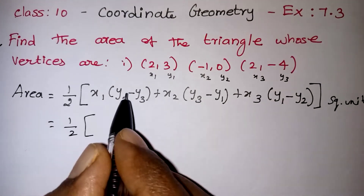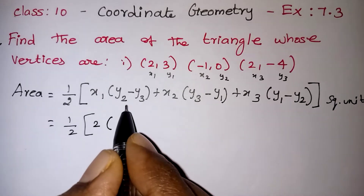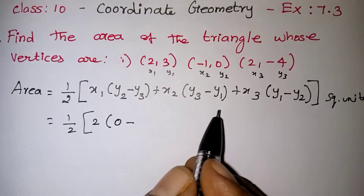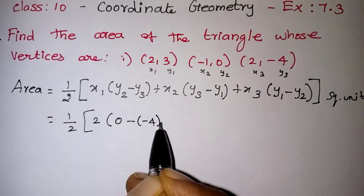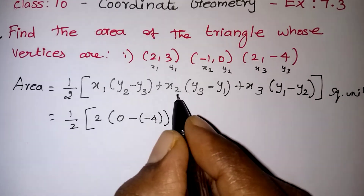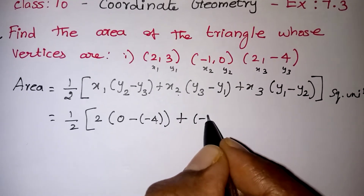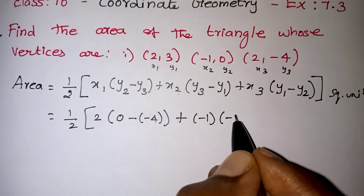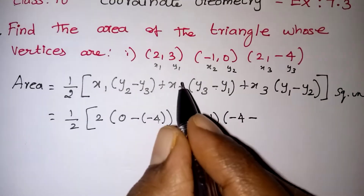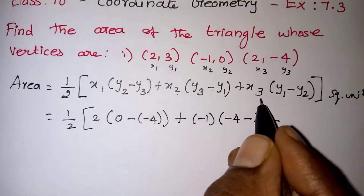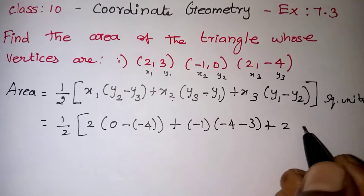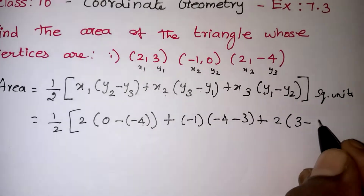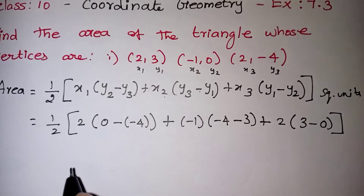Substituting: half into x1(y2 - y3) — x1 is 2, y2 is 0, y3 is -4, so (0 - (-4)) gives plus 4. Next plus x2(y3 - y1) — x2 is -1, y3 is -4, y1 is 3, so (-4 - 3). Then plus x3(y1 - y2) — x3 is 2, y1 is 3, y2 is 0, so (3 - 0). We take these values from the question and proceed to calculate.